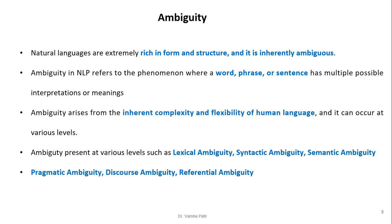Natural languages are extremely rich in form and structure and hence inherently ambiguous. Ambiguity in NLP refers to the phenomenon where a word, phrase or sentence has multiple possible interpretations or meanings. Ambiguity arises from the inherent complexity and flexibility of human language and it can occur at various levels such as lexical, syntactic, semantic, pragmatic, discourse and referential level.